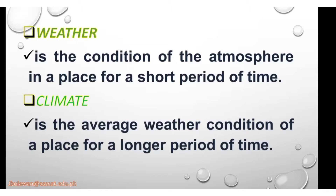Weather is stated on the news as everyday conditions. So that's the difference: climate is seasonal and weather is everyday — the everyday atmospheric condition, such as whether it will rain or not.